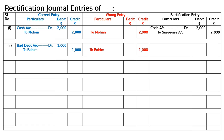To rectify this, we debit Bad Debts account. Since no other account was debited, we write: Bad Debts account debited to Suspense account, 1000, because Rahim's amount and name were correctly recorded on the credit side. Hence the rectification entry is Bad Debts account debited to Suspense account, 1000. Being amount of 1000 written off from Rahim's account was not debited to Bad Debts account, now rectified.